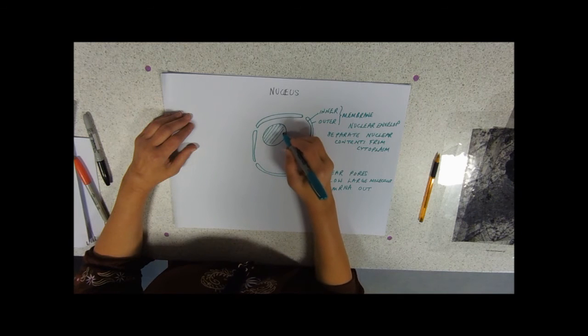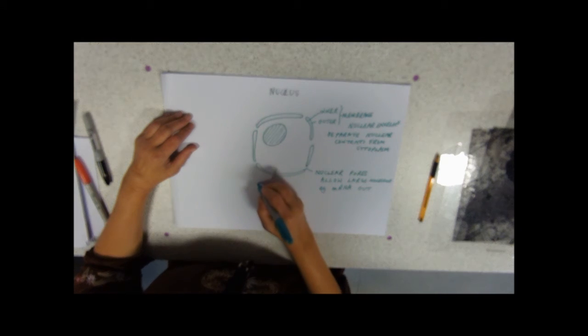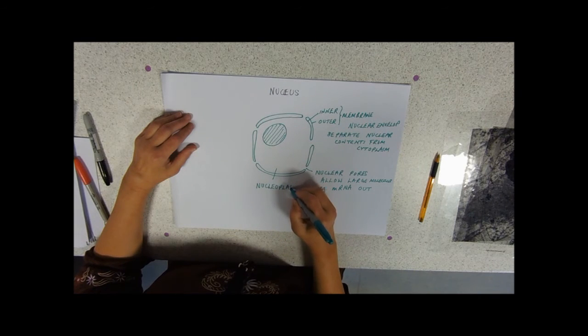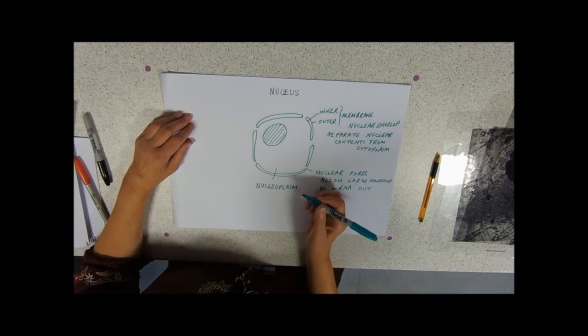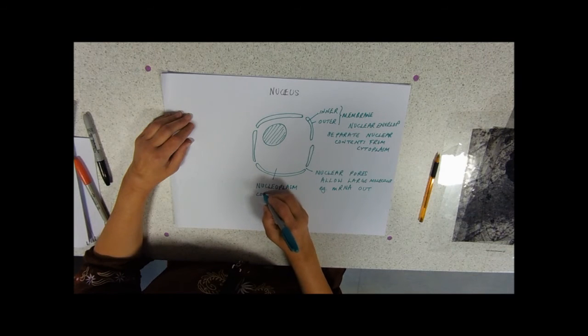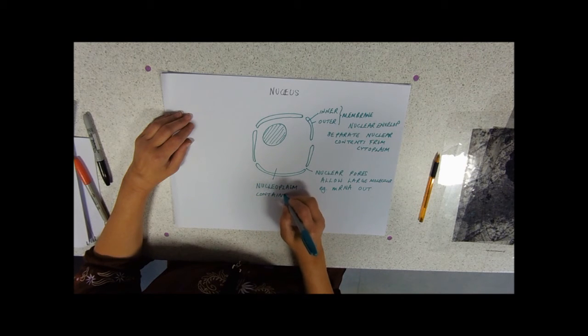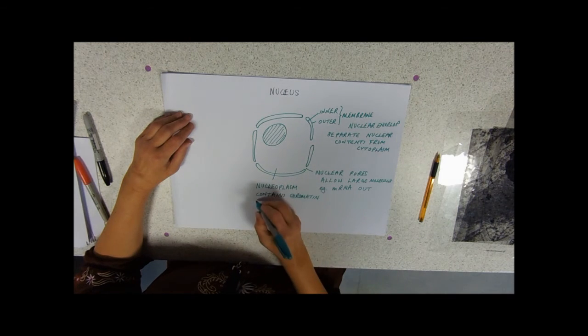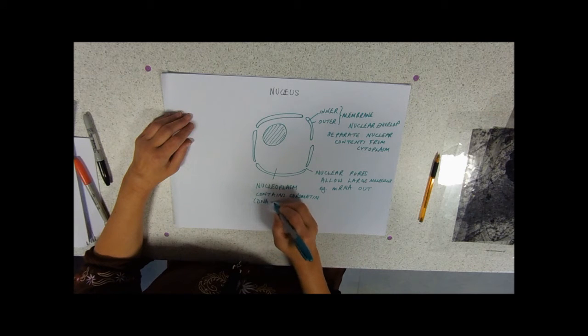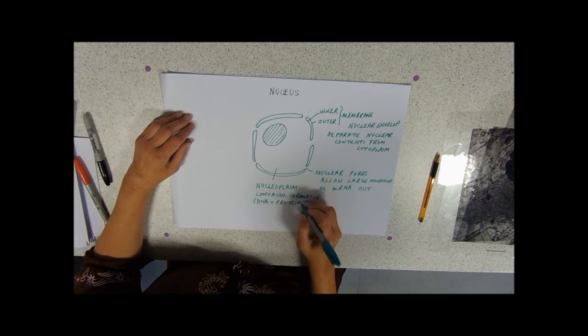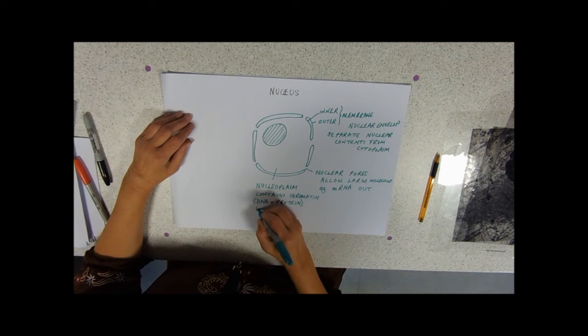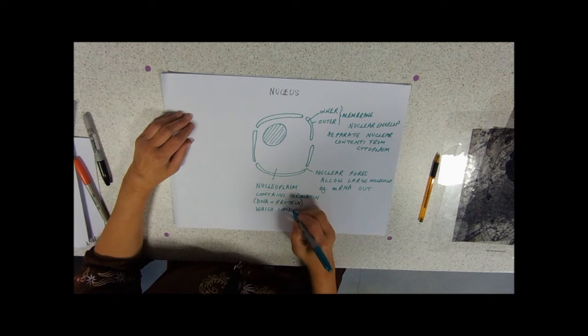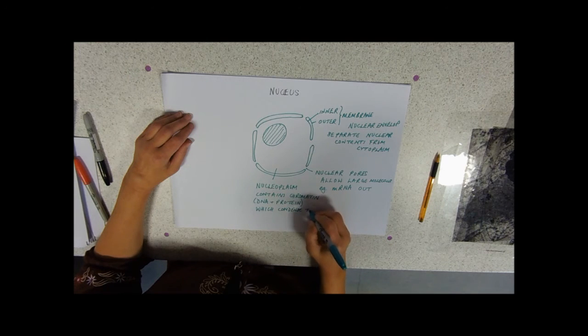We've then got—I'll just put my dark staining nucleolus in there. This bit here is called the nucleoplasm, just to distinguish it from cytoplasm, which is cell plasm. And this contains chromatin, which is DNA plus protein, and during cell division the job of chromatin is to condense to form chromosomes.